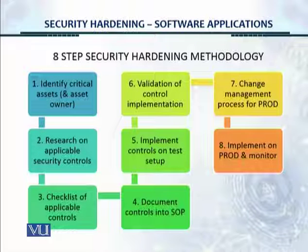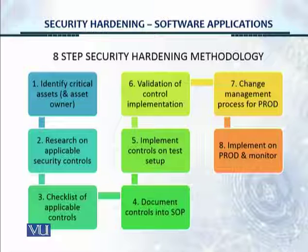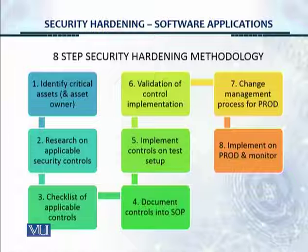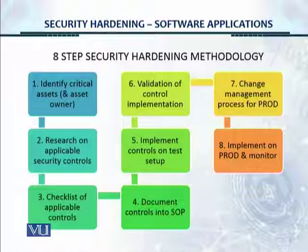This is another view of the eight-step security hardening methodology we saw earlier, and for software we will follow exactly the same methodology. Step one: identify the critical assets and prioritize based on criticality, risk, and threat. A software application exposed to the internet is more critical than an internal application. An application running financial transactions or money transfers is more critical than one taking stock of inventory.